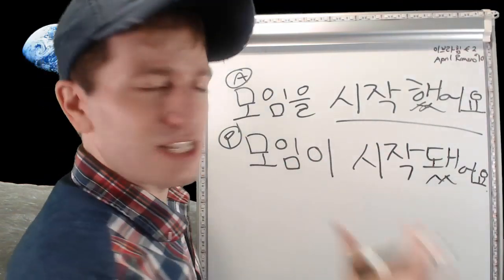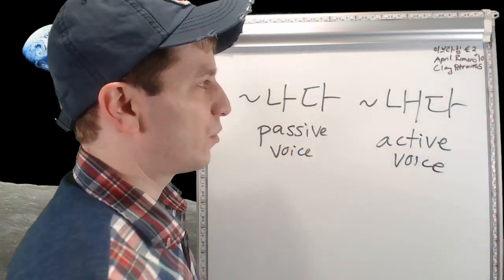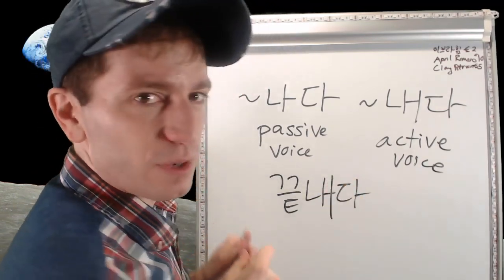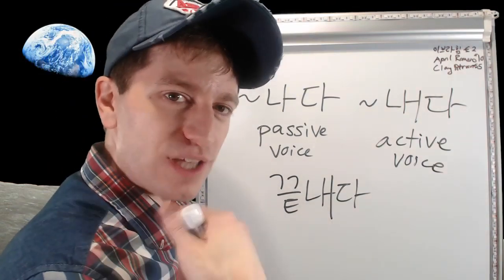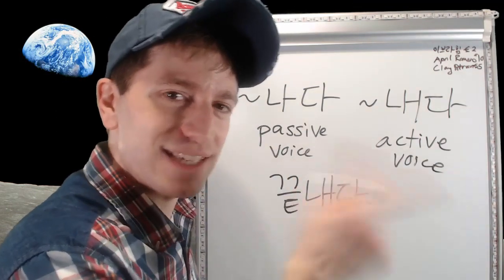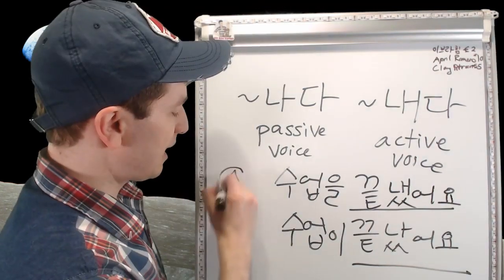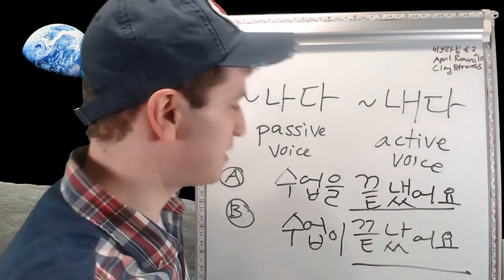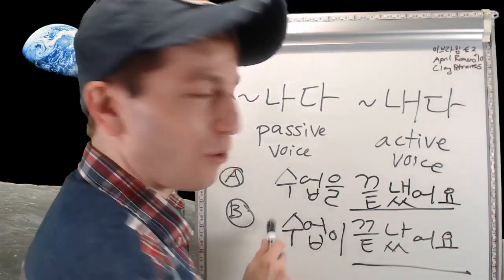The next type of verb is simple. Consider verbs ending in 나다 or 내다 — for example, 끝나다 and 끝내다. 끝나다 is passive — something finishes. 끝내다 is active — I or somebody finishes something. If you're a student going to class, you can only say one of these. B (끝났어요) is the only correct one, because it would be wrong to use active voice in that context.